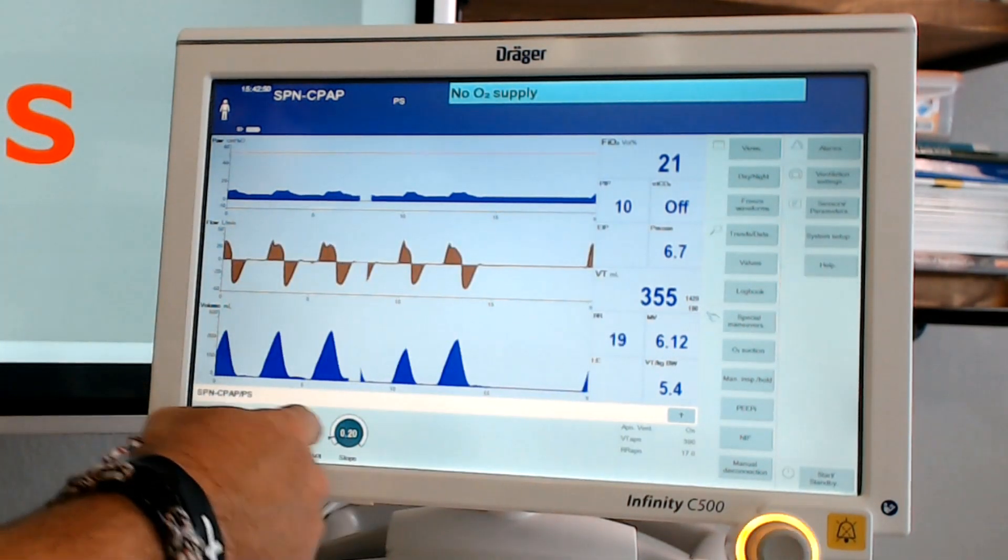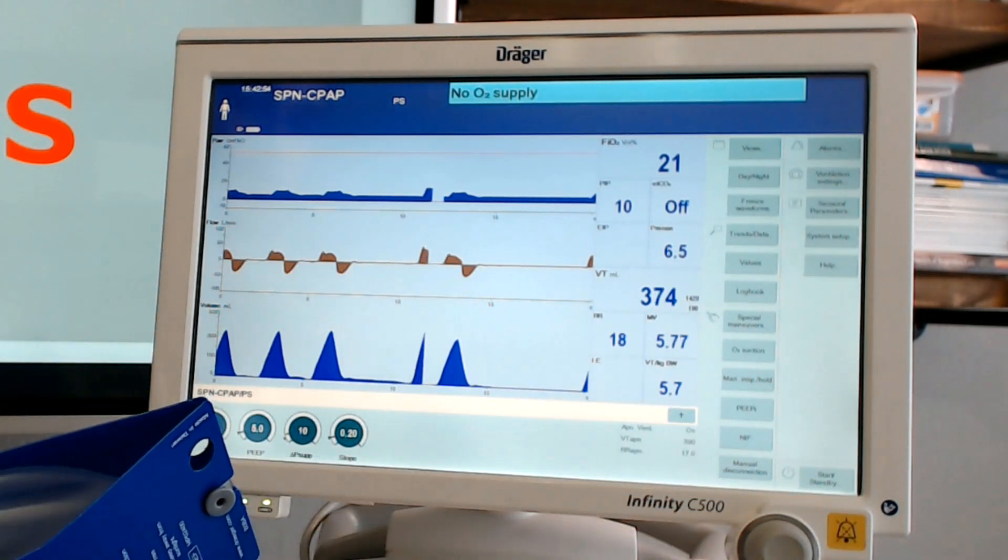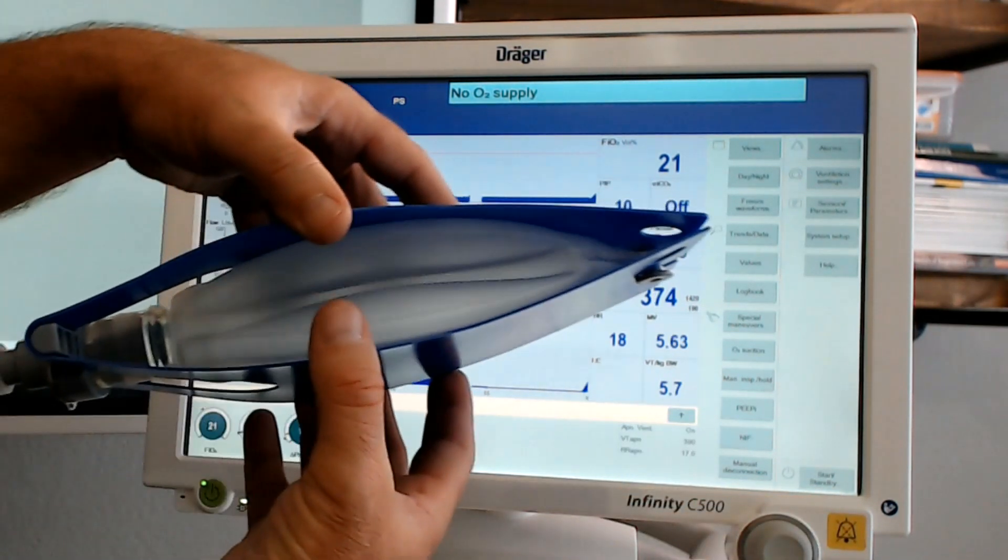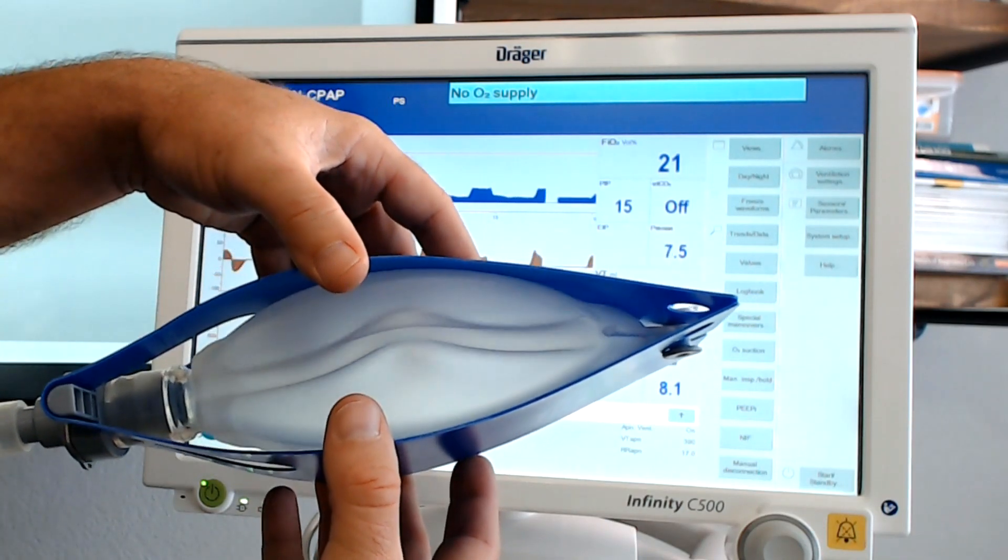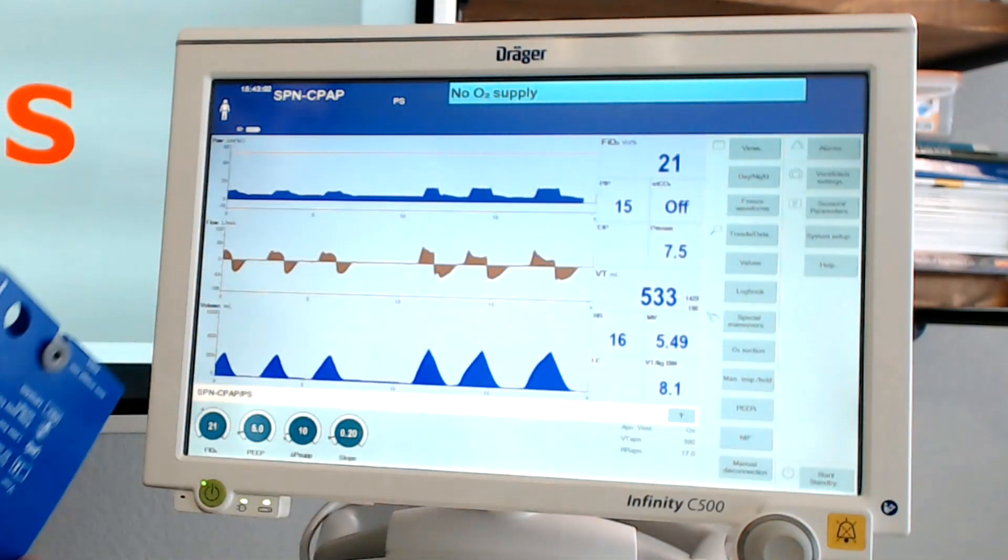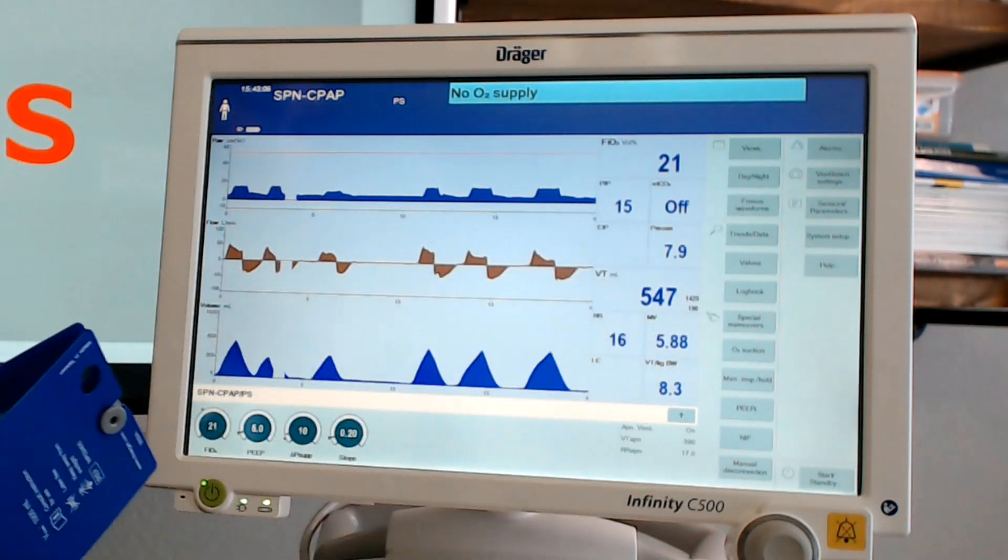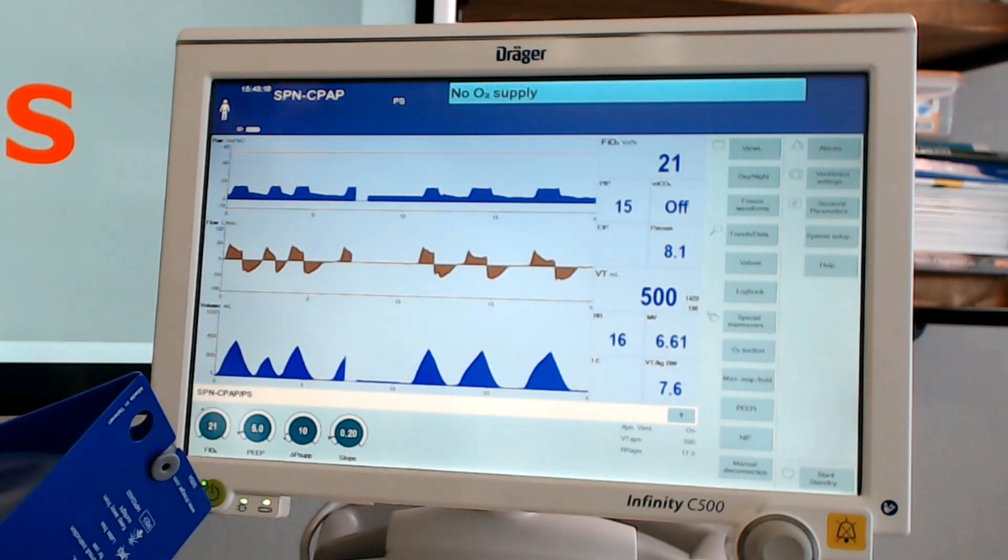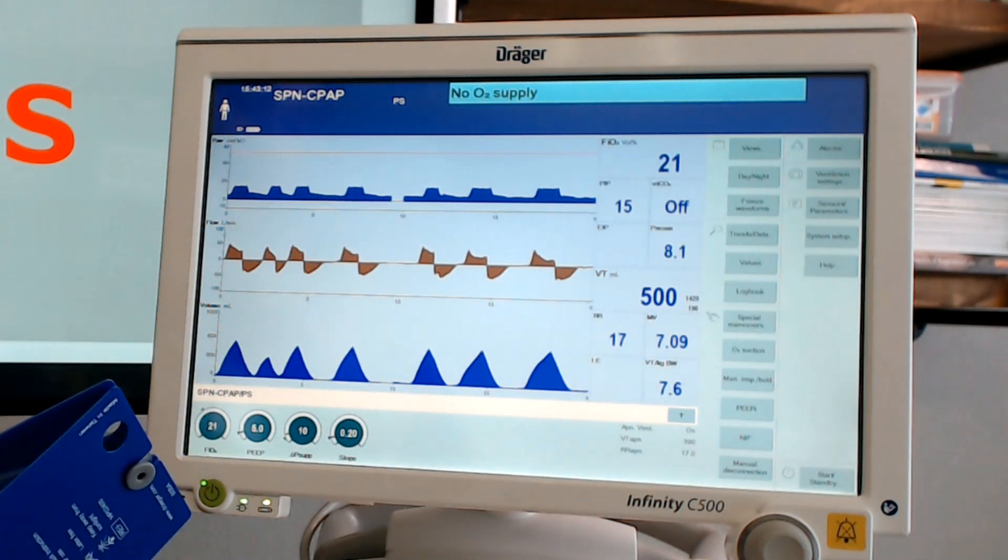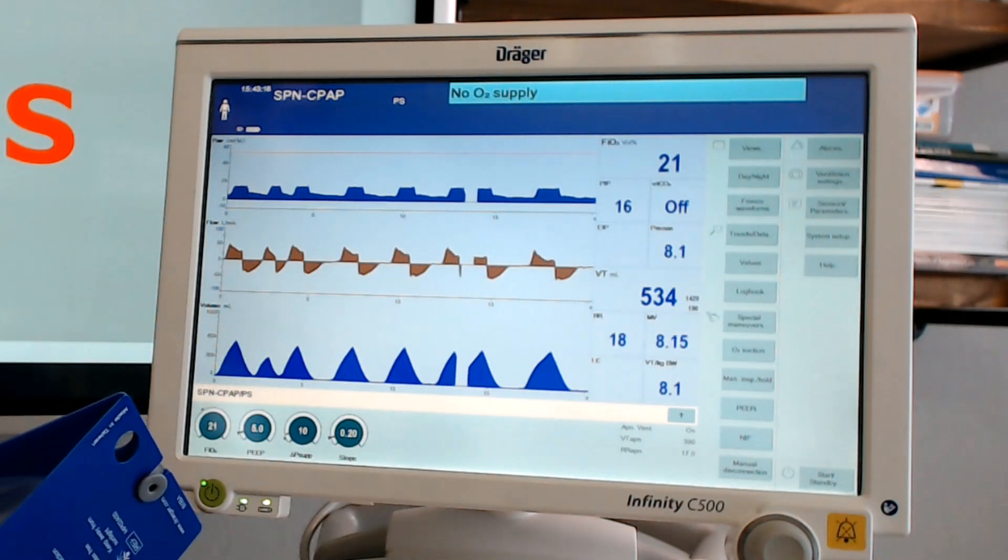Well, what if we take this pressure support to 10? Watch what happens. Same amount of pressure. Just slightly pulling on the test lung. Look at our volumes. They're now 557, 500, 520, 534.